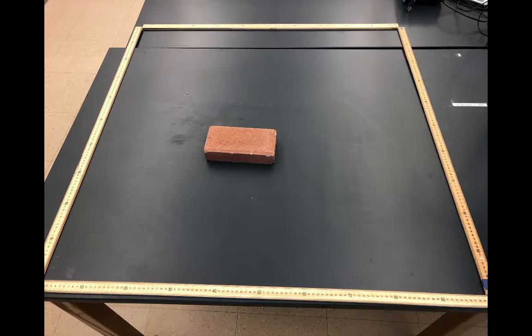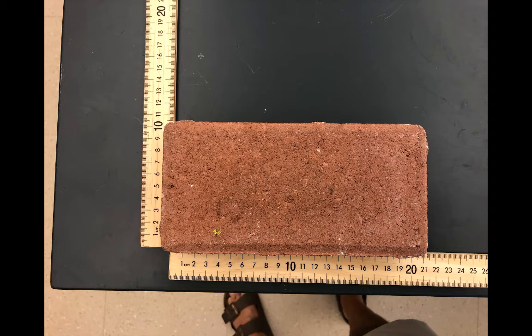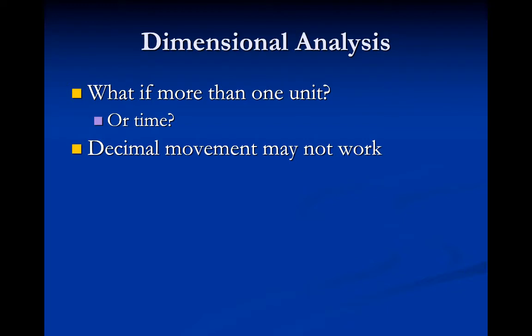Let's say I wanted to know the area of this brick. I wouldn't want to measure it in square meters — this is what a square meter would be — so that would be difficult. I would more likely measure it in square centimeters. I can see it's about 10 centimeters by about 21 centimeters. But the square centimeter is not the standard unit of area; it's the square meter, so I'd have to convert square centimeters to square meters.